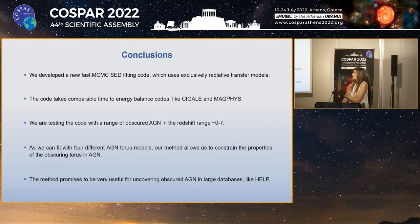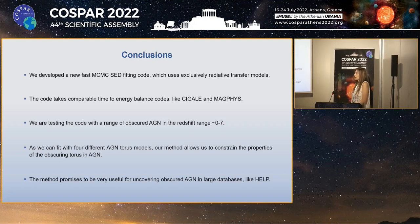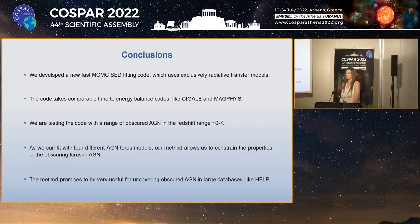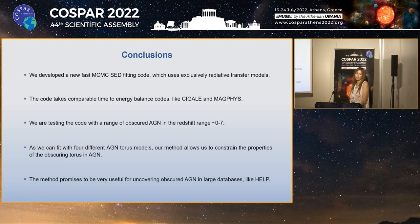As a conclusion, in this contribution I have demonstrated our development of a new, fast MCMC SED fitting code which uses exclusively radiative transfer models. The code takes comparable computing time to popular energy balance codes, and we are testing it with a broad range of obscured AGN in the redshift range 0 to 7. By fitting four different AGN torus models, we become able to constrain the properties of the obscuring torus in AGN. Our method promises to be very useful for uncovering obscured supermassive black holes in large databases like HELP. Thank you very much for your attention.